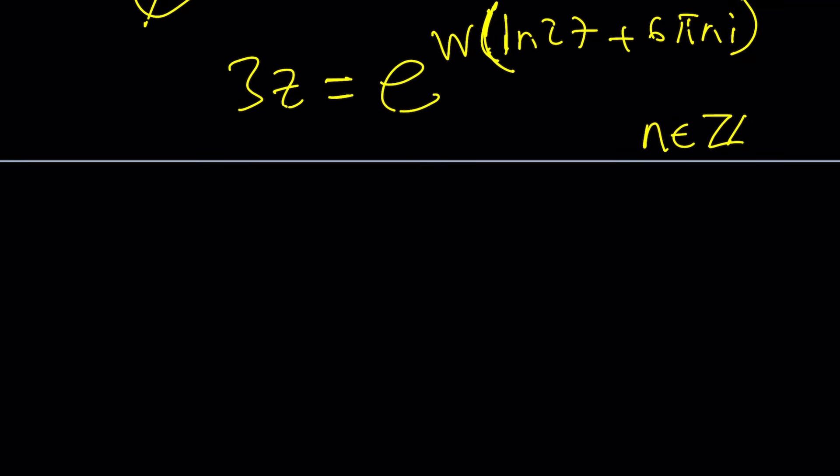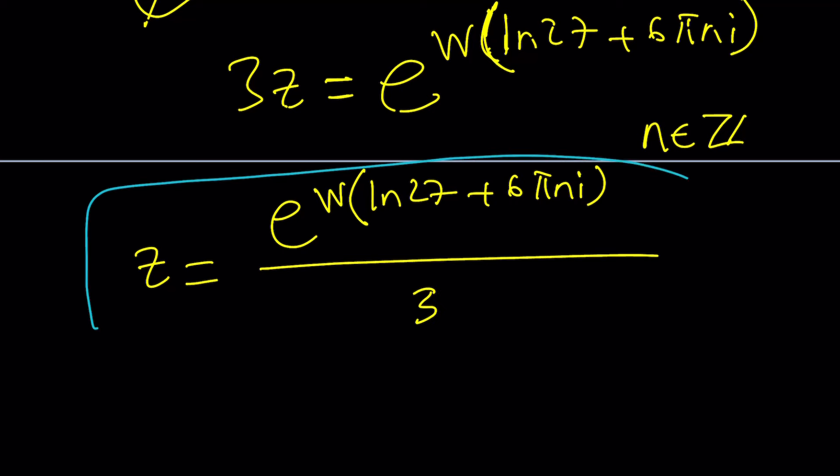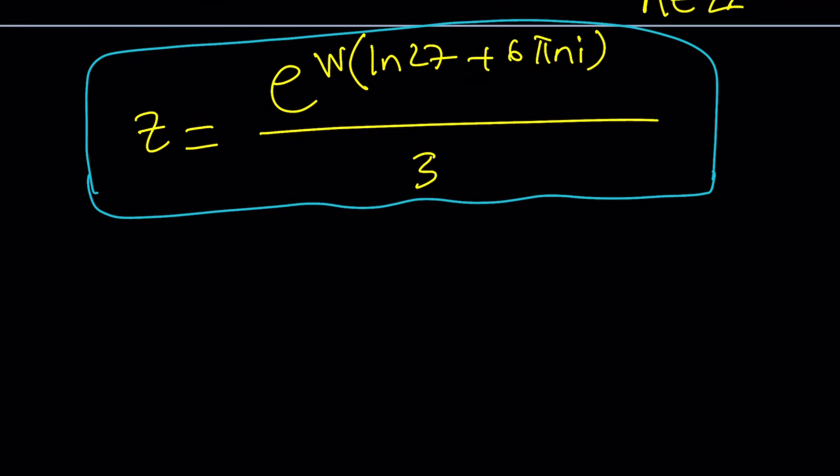What I need to do next is just divide both sides by 3 and you'll get the answer. You can either write 1 third in the front or just divide the whole thing by 3. Same idea. So, let's go ahead and write it this way. e to the power w ln 27 plus 6 pi n i all over 3. And that will be our z value. Great. We arrived at a solution even though that wasn't very nice. But these kinds of equations can only be solved like this. If you want a numerical value, hold on a second. I'm going to give it to you, about to give it to you.